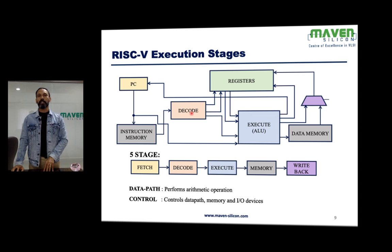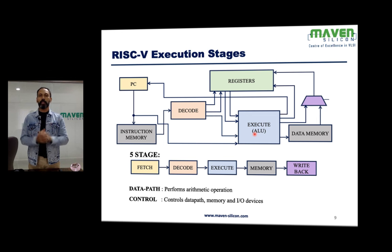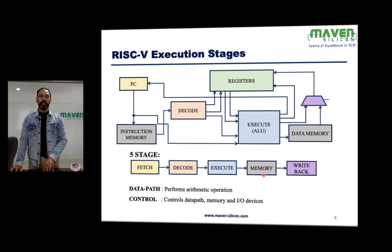Once it decodes the instruction, it communicates to the arithmetic logic unit what kind of operation it has to perform. As part of execution, the ALU performs operations like arithmetic, logic, or shift operations, and based on the functionality it produces the output. The results are sometimes stored in memory and most of the time stored back into a register. In the memory stage, it writes values into memory or reads values from memory. Then in write-back, whatever results the ALU produces are written back to the register — primarily the destination register.